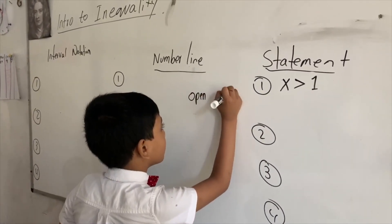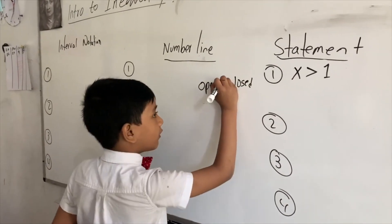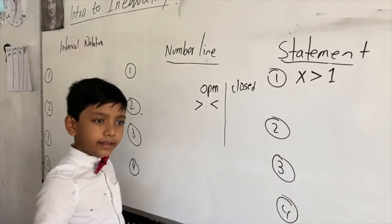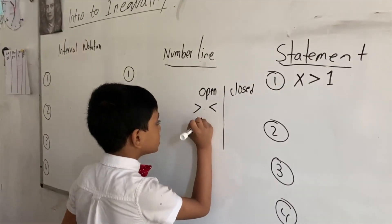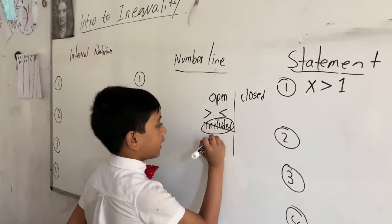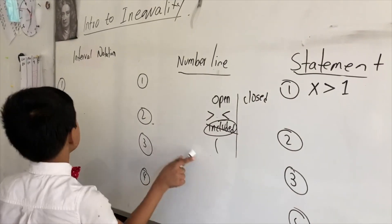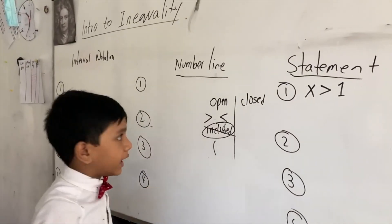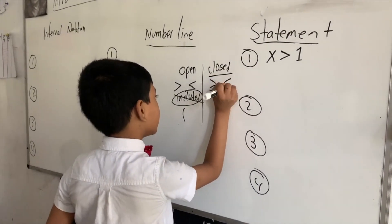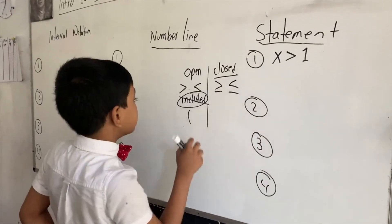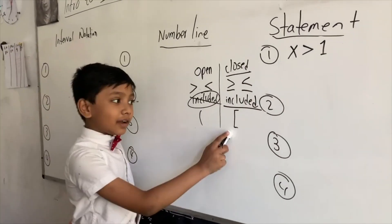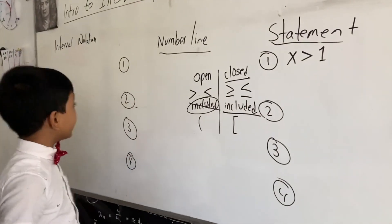There are two types of signs: open ones and closed ones. Open ones don't have an equal to in there, so the number is not included. An open circle looks like this in the interval notation — you put a parenthesis next to a number with an open circle. A closed one is basically the opposite — you have an equal to sign, and you put a square bracket in the interval notation.